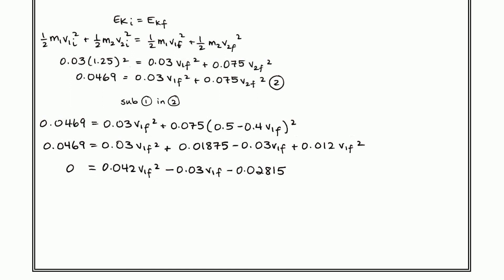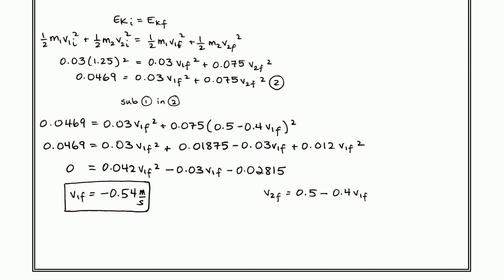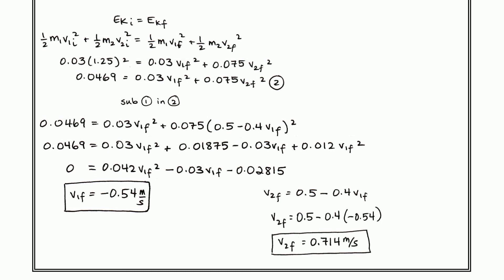Using the quadratic formula, we arrive at the acceptable root: V1 final equals negative 0.54 meters per second. You can try this yourself by pressing pause. Back-substituting into the first equation — 0.5 minus 0.4 times V1 final — we find V2 final equals 0.714 meters per second.